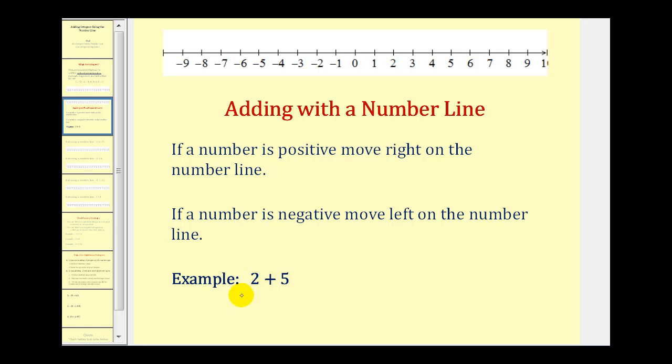So even though we know two plus five is equal to seven, let's go ahead and model this on the number line. We would start at zero and move two units to the right because this is a positive two.